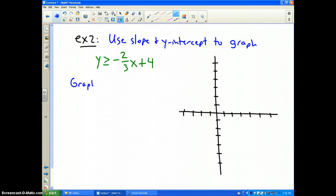Well, what we're going to do to begin with is graph just like an equals equation. So, I know the y-intercept is equal to four. So, I put a dot on four and our slope is negative 2/3.